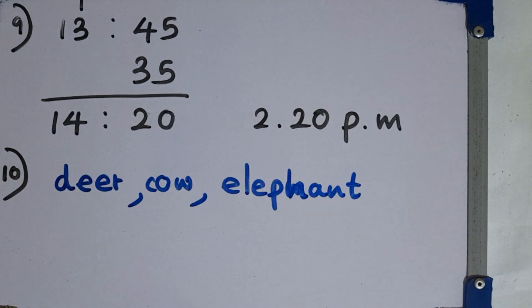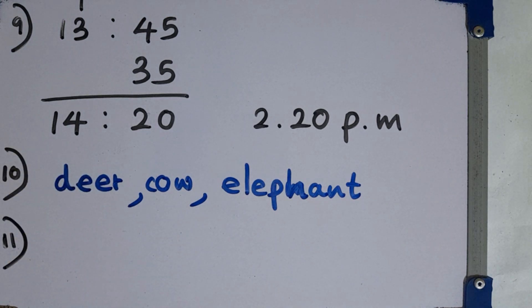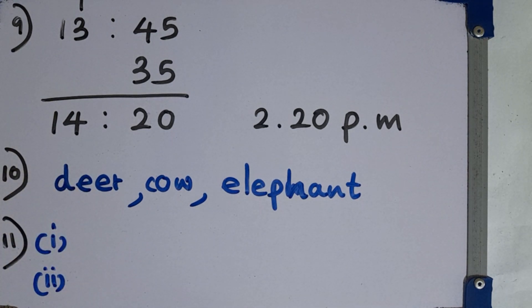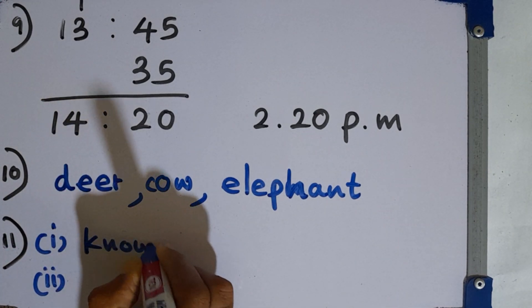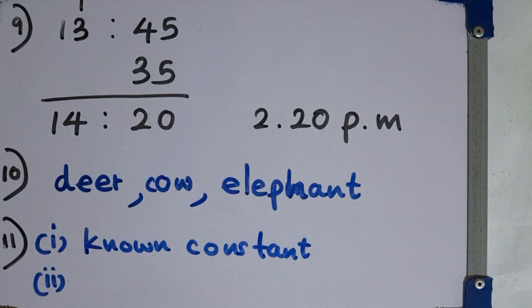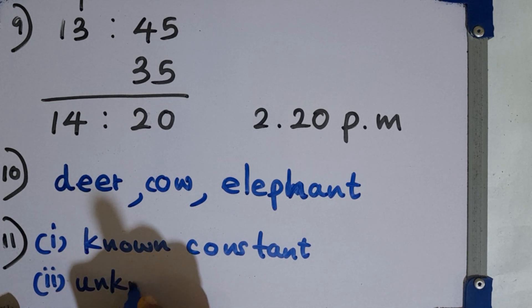Question number 11. Write down if the following statements are known constant or an unknown constant. Number of players in a cricket team. That is a known constant. Then second part the number of bricks needed to construct a wall. That is also a constant but we don't know the value here. That is unknown constant.